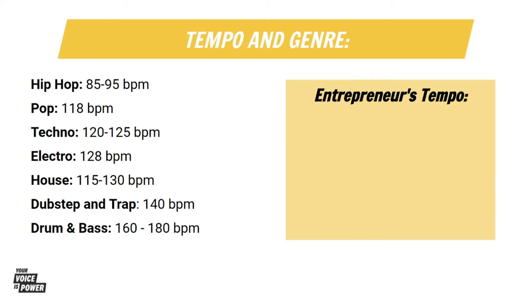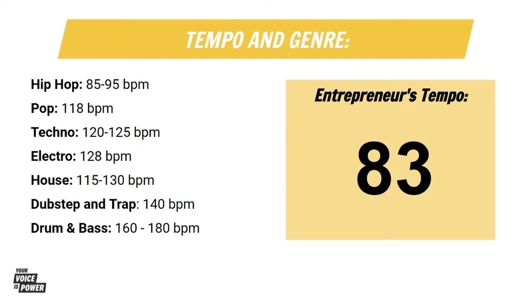Different genres of music often have different tempo ranges. What do you think Entrepreneur's tempo is? Do you have any guesses? I think it's kind of fast, kind of slow. You can look at the genres there and their beats per minute. The answer is 83 beats per minute.